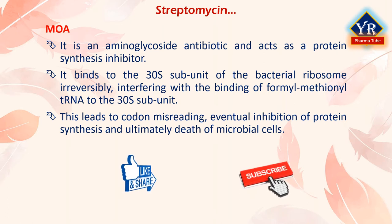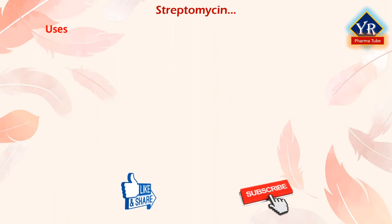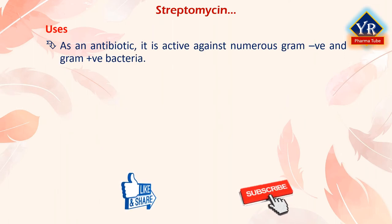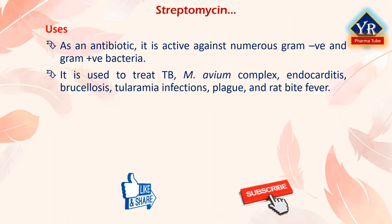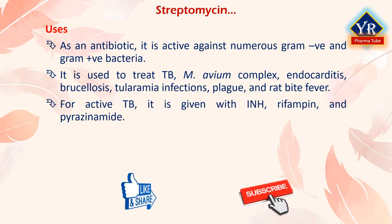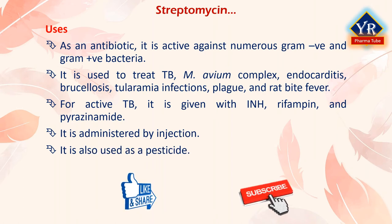Streptomycin is an antibiotic that inhibits both gram-positive and gram-negative bacteria and is therefore a useful broad-spectrum antibiotic. As an antibiotic, streptomycin is active against numerous gram-negative and gram-positive bacteria. It is used in a number of bacterial infections including tuberculosis, Mycobacterium avium complex, endocarditis, brucellosis, tularemia infections, plague, and rat bite fever. For active tuberculosis, it is often given together with isoniazid, rifampicin, and pyrazinamide. It is administered by injection into a vein or muscle. Streptomycin is also used as a pesticide to combat the growth of bacteria beyond human applications.